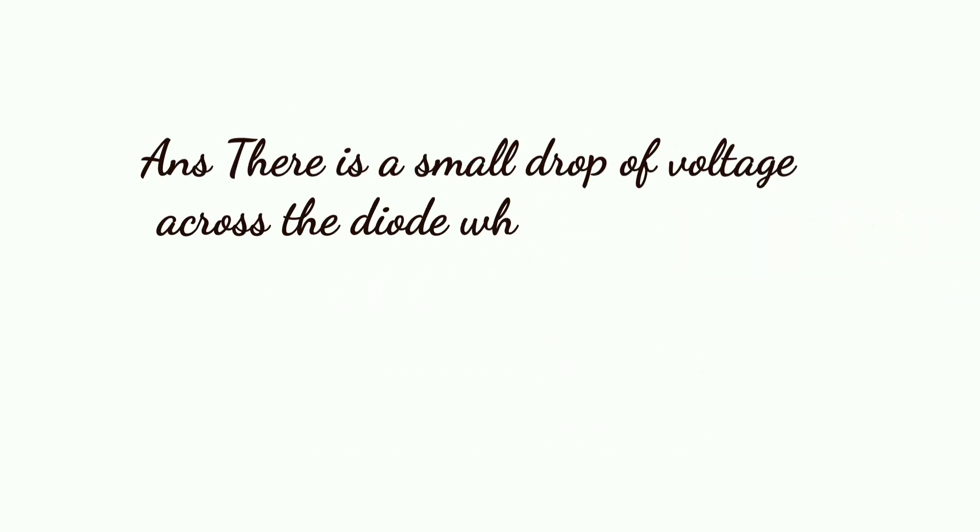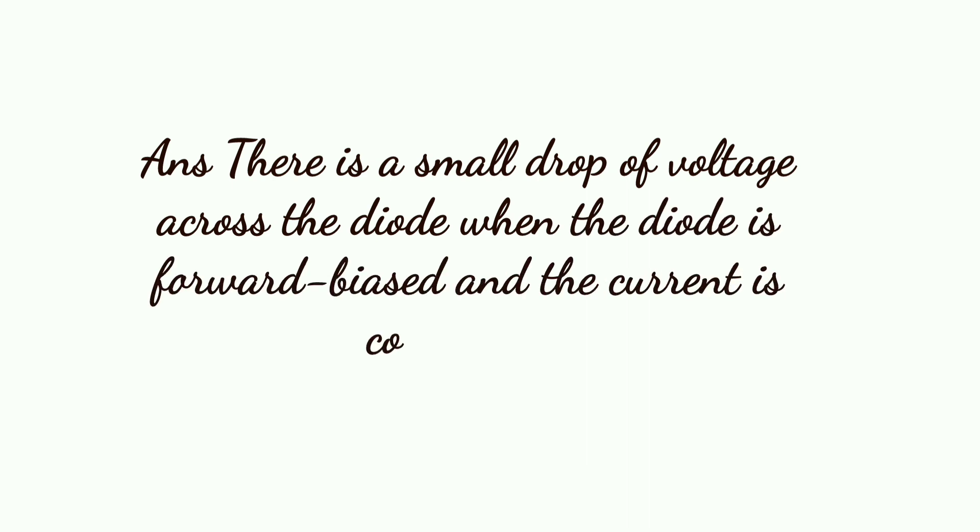There is a small drop of voltage across the diode when the diode is forward-biased and the current is conducting.